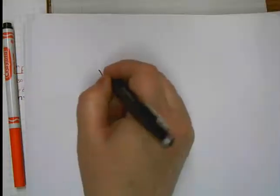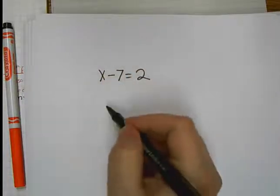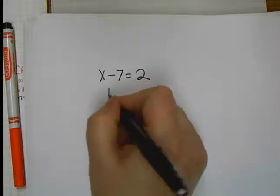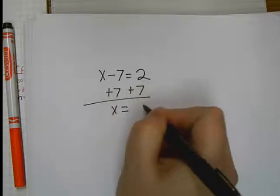Okay, this one's a little different. On this one, what do I need to get rid of? Minus 7. How do I get rid of that? Plus 7 to both sides. So, X equals 9.